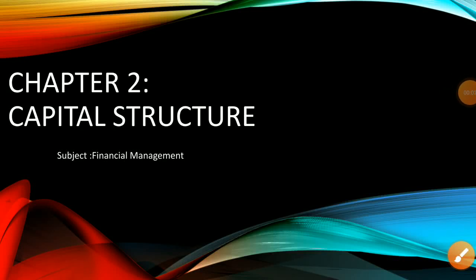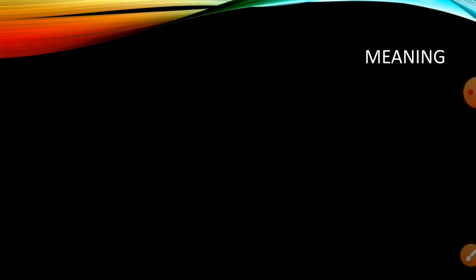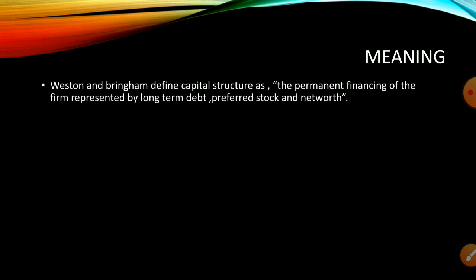Today let's see Chapter 2: Capital Structure. Capital structure means it is the permanent finance of the firm. Weston and Brigham define capital structure as the permanent financing of the firm, represented by long-term debt, preferred stock, and net worth. Long-term debt includes debentures, bonds, and long-term loans. Preferred stock means preference shares, and net worth includes equity shares and reserves and surplus.